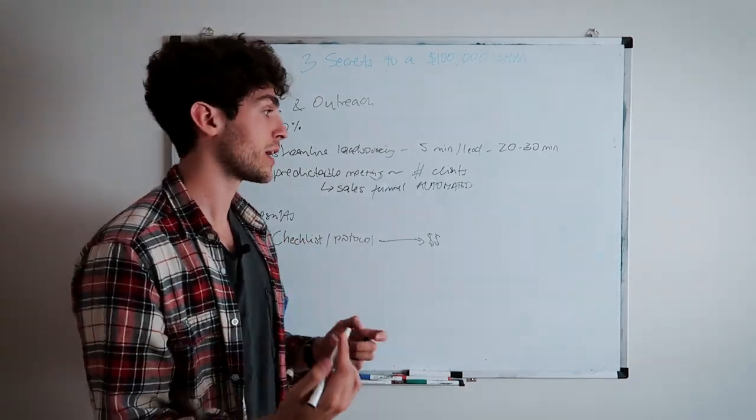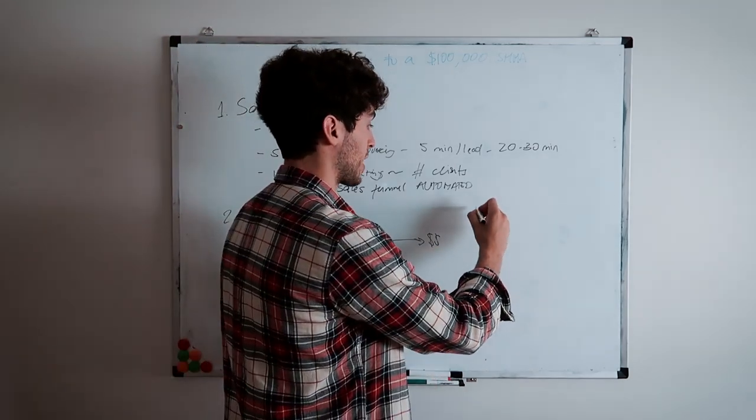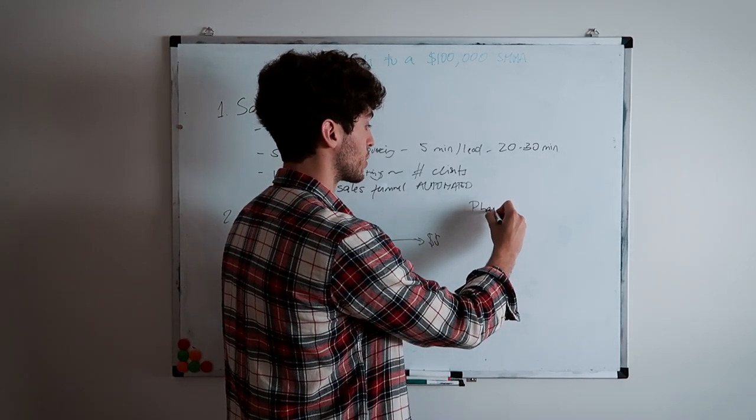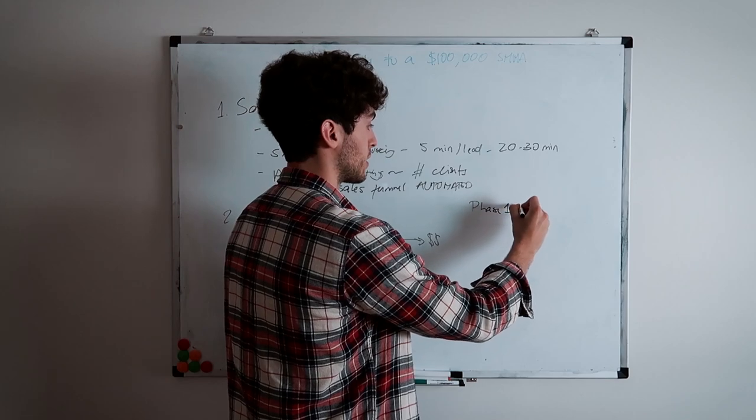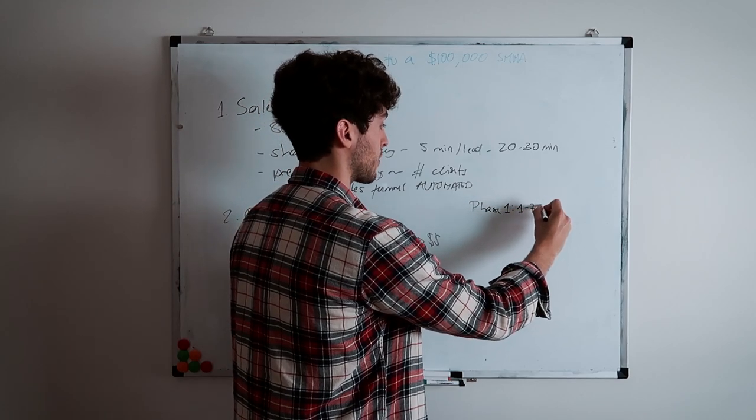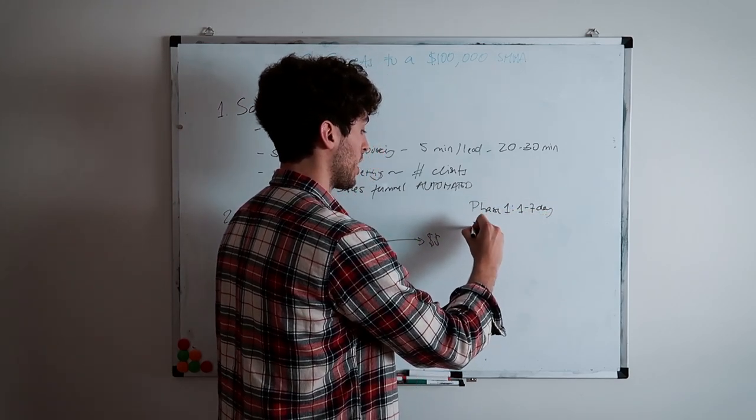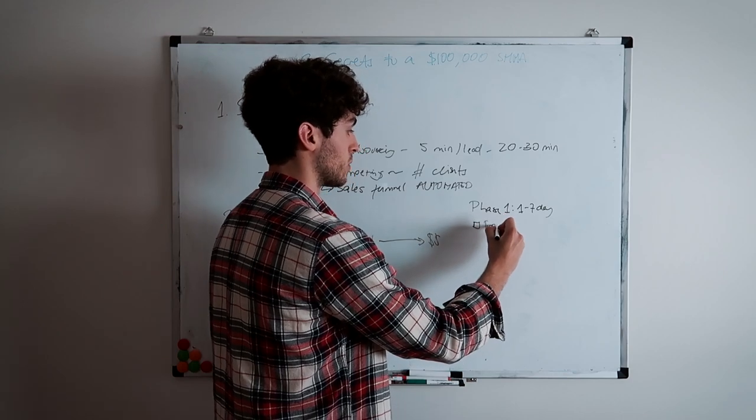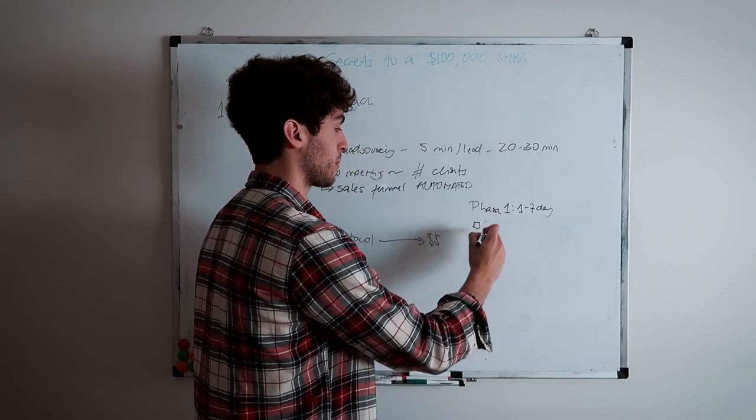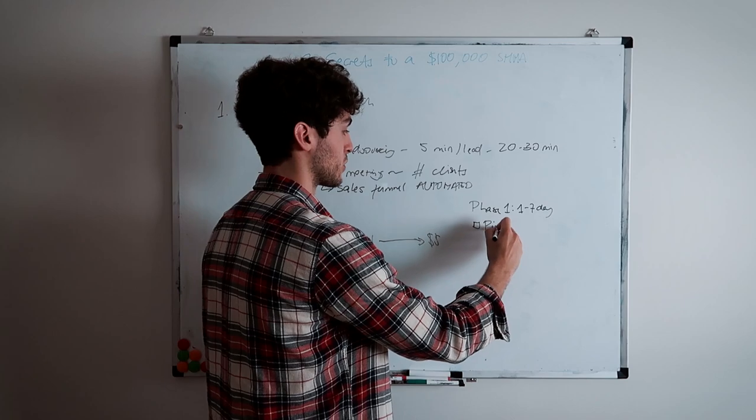This is a very rough draft, but I just want to give you guys a bit of an idea. So you can do a checklist. You can have phase one, which could be the first one to seven days. And you could have number one is troubleshoot pixel. I'm not going to write the whole thing because I want to make this video not too long. But for example, you could troubleshoot pixel, make sure that all the events are firing.